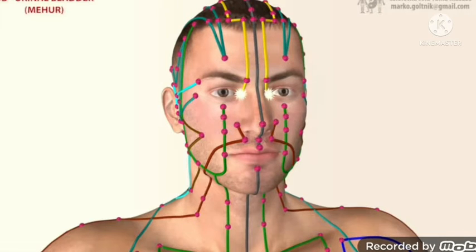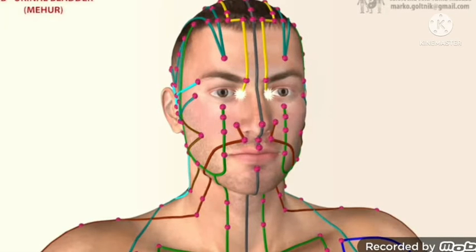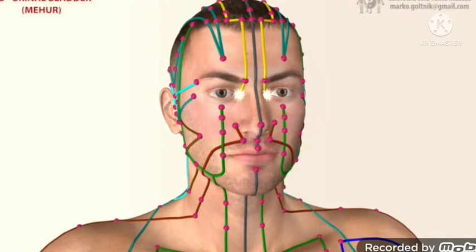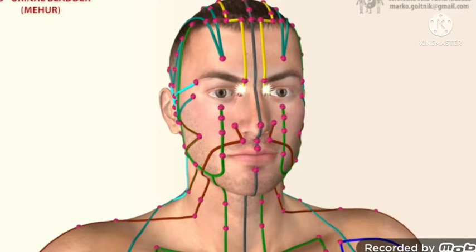UB is also a yang meridian and the pair organ of UB is kidney. In UB we have total 67 points. See how it flows, how the Chi flows in the UB meridian.